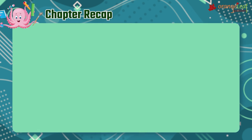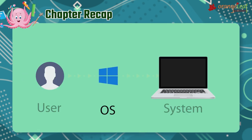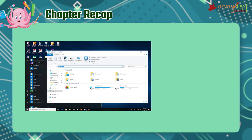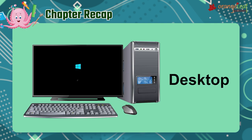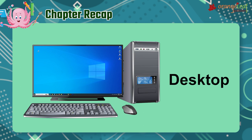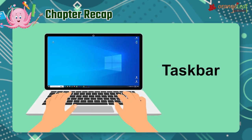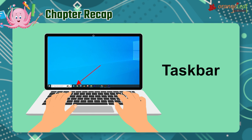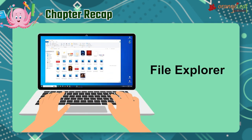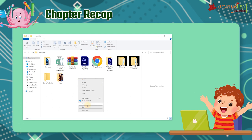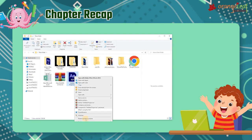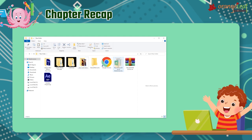Chapter recap: the operating system is the most important application on a computer. Microsoft Windows is a powerful GUI (graphical user interface) operating system. The desktop is the initial screen displayed when you turn on your computer. The taskbar is the horizontal bar located at the bottom of your screen. File Explorer is used to manage and display files and folders. It is possible to create, rename, copy, move, and delete files and folders.